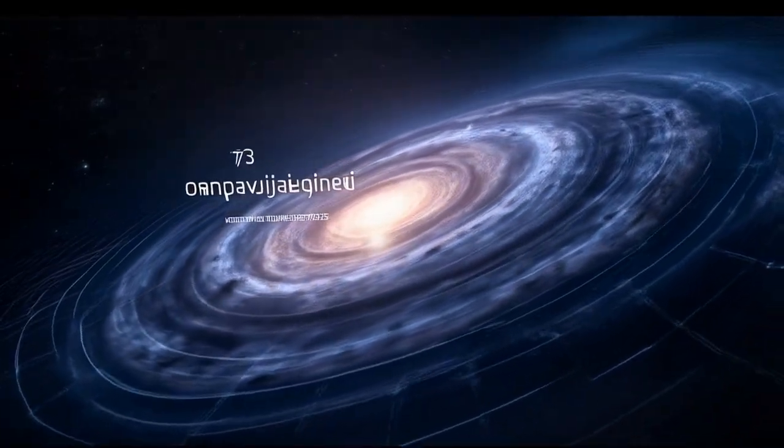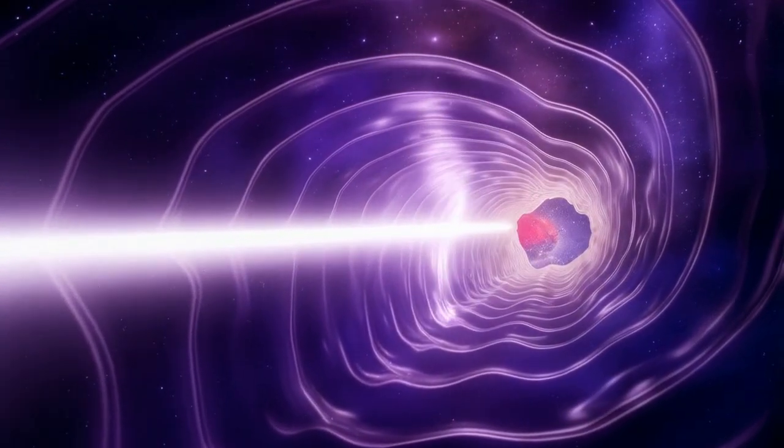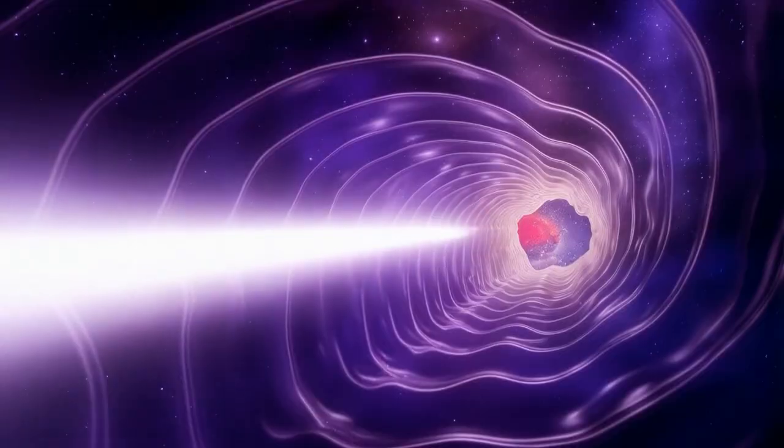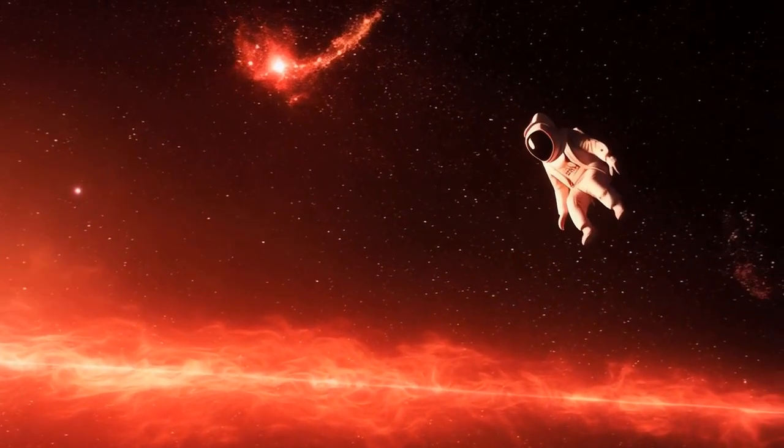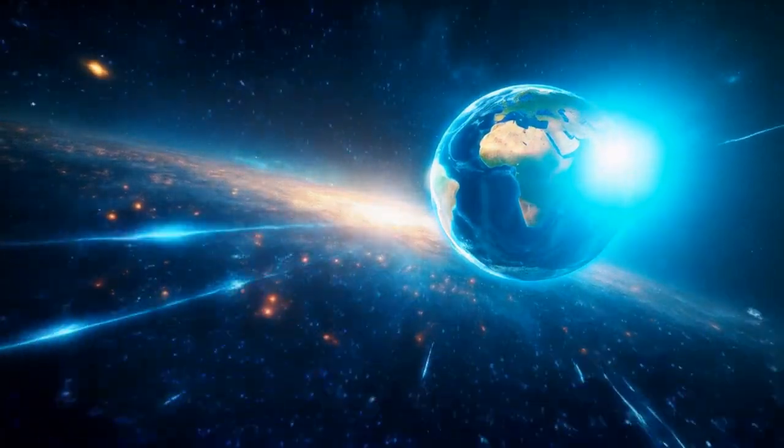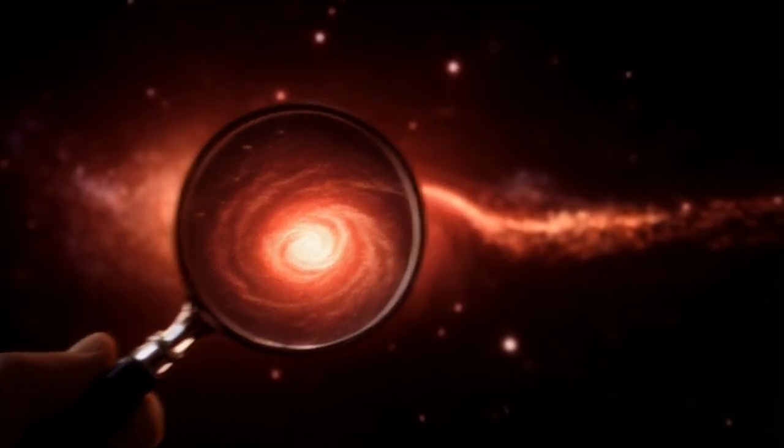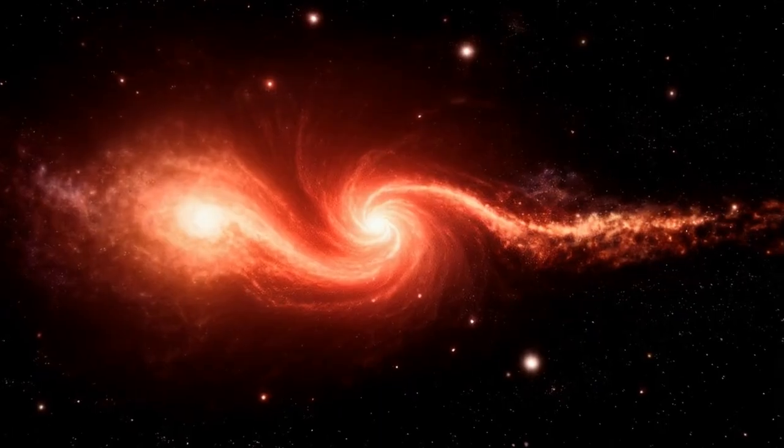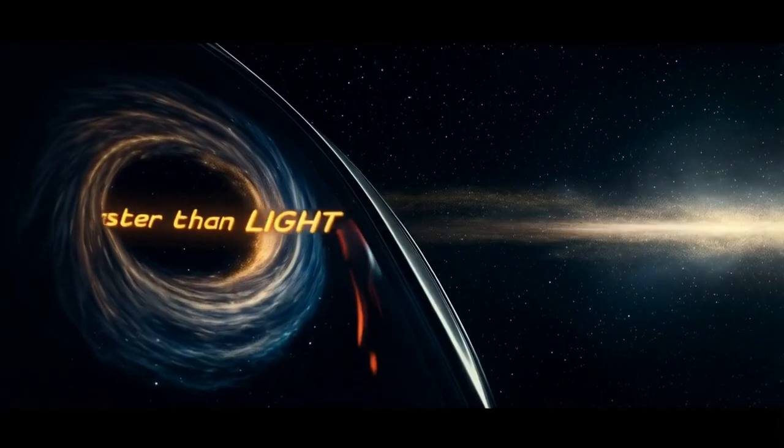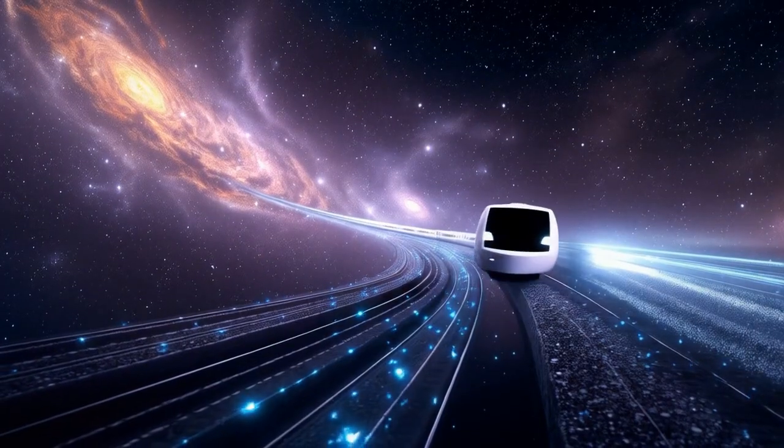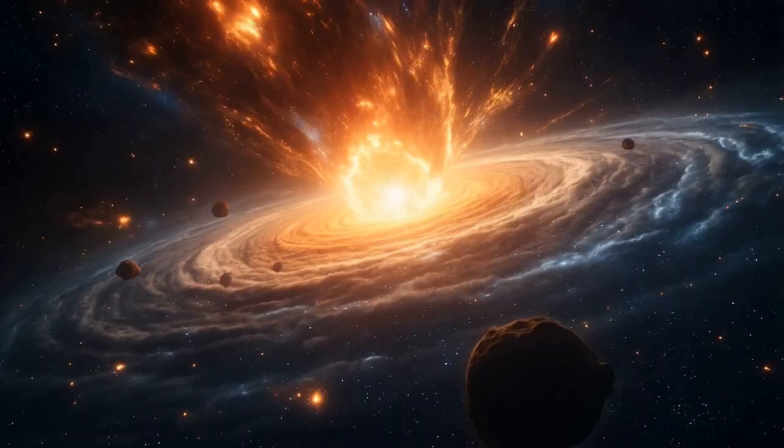Let's make it even clearer with another analogy. Imagine you're standing on a moving walkway at an airport, like the ones in big terminals. You're walking at a normal pace, but the walkway is speeding up, carrying you faster than you could ever run. In the universe, galaxies are on a cosmic moving walkway, space itself. The farther a galaxy is from us, the more space there is to stretch, so the faster it appears to move away. For galaxies beyond a certain distance, called the cosmological horizon, the expansion is so rapid that their light will never reach us. It's like they're on a walkway moving faster than light can travel, forever out of sight.